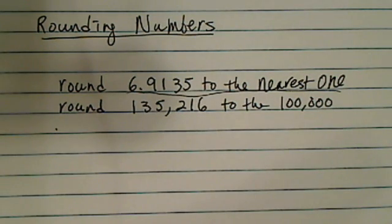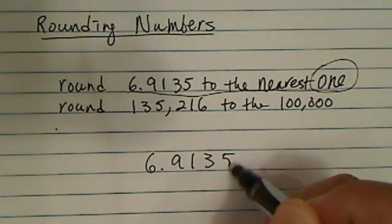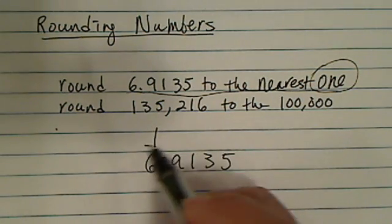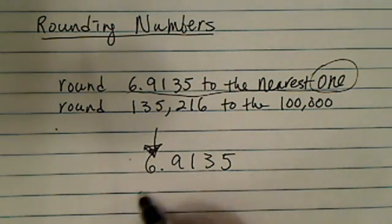It says round 6.9135 to the nearest one. Nearest one is the first single digit, so 6.9135. I always tell my students, nearest one - that's the ones digit. The tenth digit is the next one over.